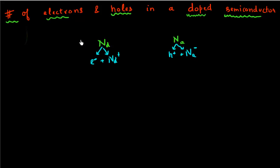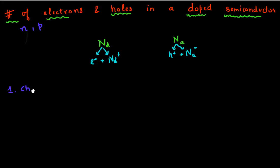So how do I find the number of electrons and holes in my semiconductor? The first thing I can expect is what I call charge neutrality. If I'm adding donors and acceptors to my semiconductor, these donors and acceptors are essentially neutral species.